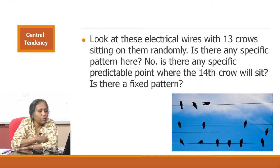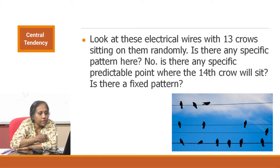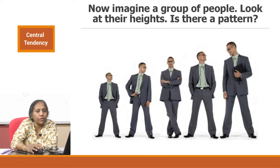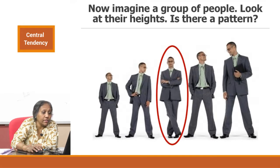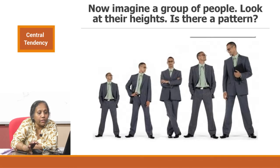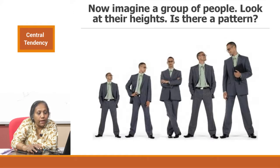Look at this picture — there are 13 crows sitting on wires, all sitting randomly. Is there a specific pattern? There is no predictable point where the next crow will sit. Now look at this other picture: people standing in ascending order of height. There is a central point — one person with average height, with some people shorter and some taller. If you have a new person to position, you would place them near that center. There is a pattern — a central tendency.